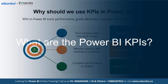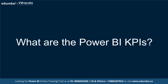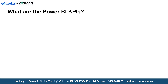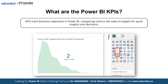KPI stands for Key Performance Indicators and allows you to assess how effectively your company meets key business objectives. Power BI KPIs track key metrics like sales, profit, or satisfaction against targets. They show actual values, goals, and trends using visual indicators, enabling quick insights and informed decisions.